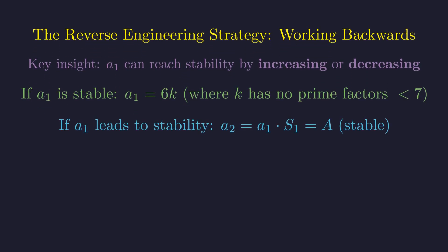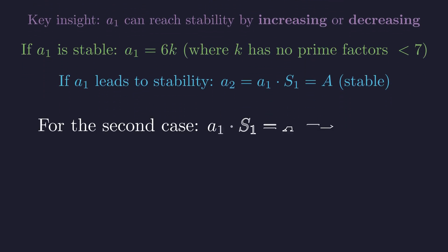For the sequence to be infinite and not immediately constant, it must increase. This means the factor S_n must be greater than 1 for any non-stable term. If A1 becomes a stable number A at the second step, then A2, which is A1 times S1, must equal A. Rearranging this equation, we get A1 equals A divided by S1. This is our reverse engineering formula.